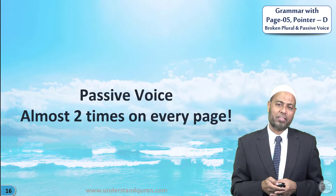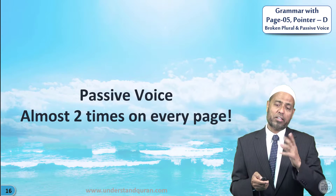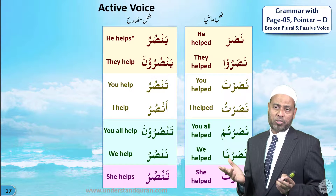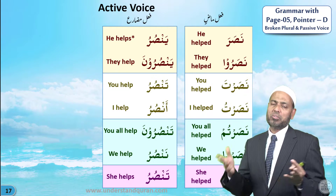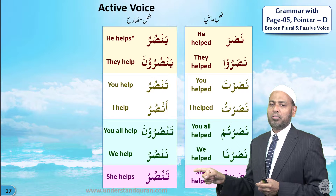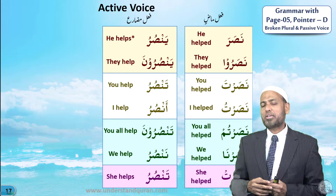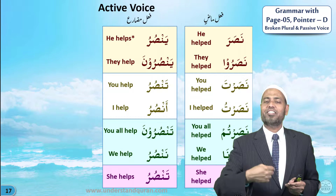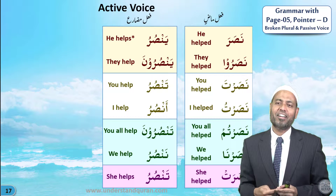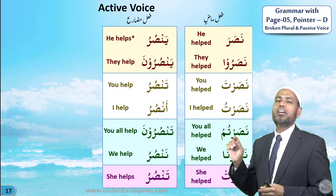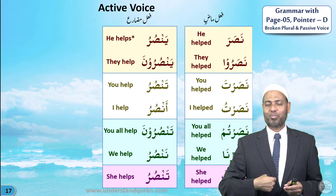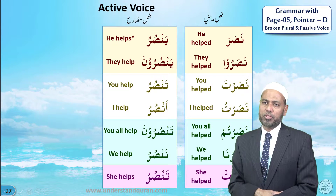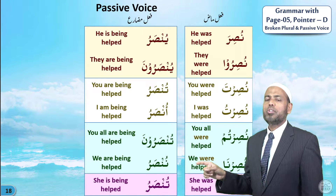Now let us take passive voice. Almost twice on every page you will find passive voice verbs. So far we have studied active voice verbs like nasara. Nasara means he helped. Now to make passive voice verbs, you just rotate the hand and change the sound. The fi'l fa'il means the doer; but for the one who is affected, we use passive. Nasir is the one who helps; mansur is the one who is helped. So nasara — nusira, meaning he was helped.